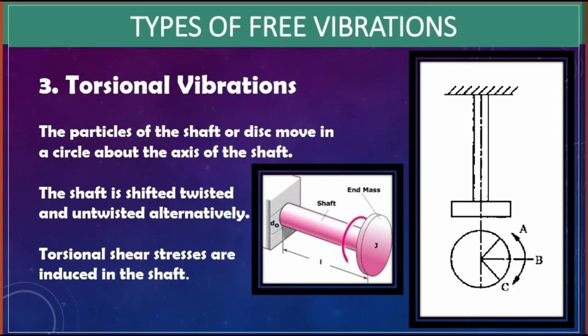Torsional vibrations: in torsional vibrations, the particles of the shaft or disc move in a circle about the axis of the shaft. The mean position is B and extreme positions are A and C. The shaft is twisted and untwisted alternatively, and torsional shear stresses are induced in the shaft.